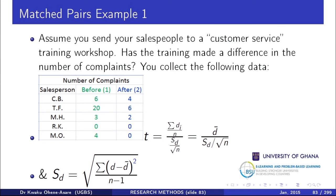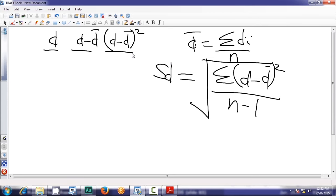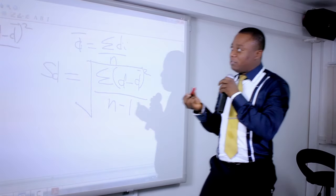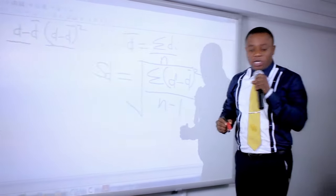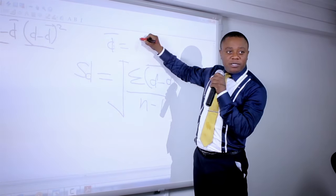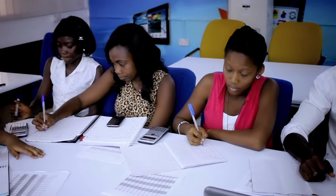The differences are: negative 2, negative 14, negative 1, zero, negative 4. Now find the mean of these values — D-bar. It is very important to apply the negative sign correctly. Summing and dividing by 5 gives D-bar equals negative 4.2. If you forget the negative sign, everything goes down the drain.